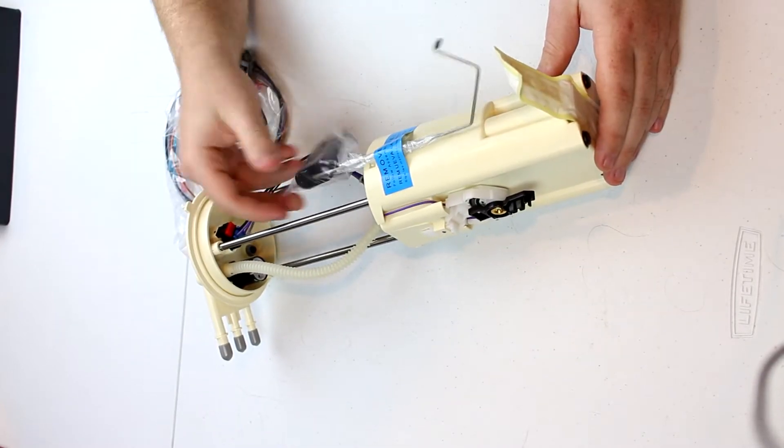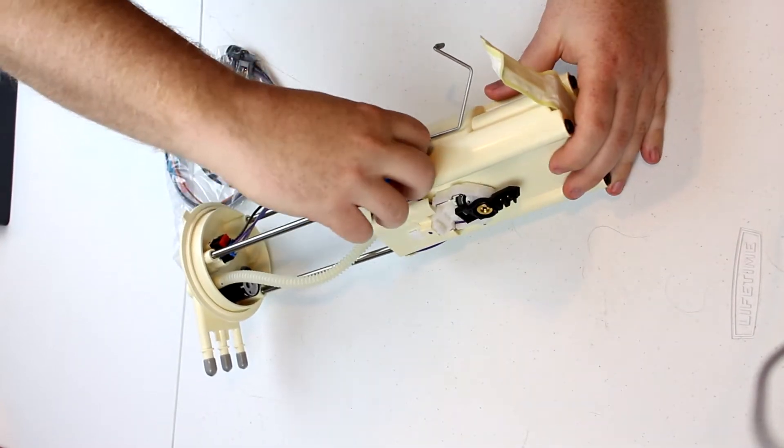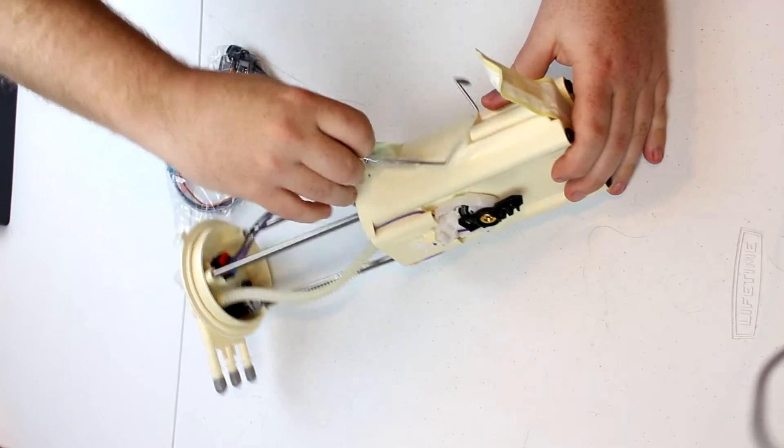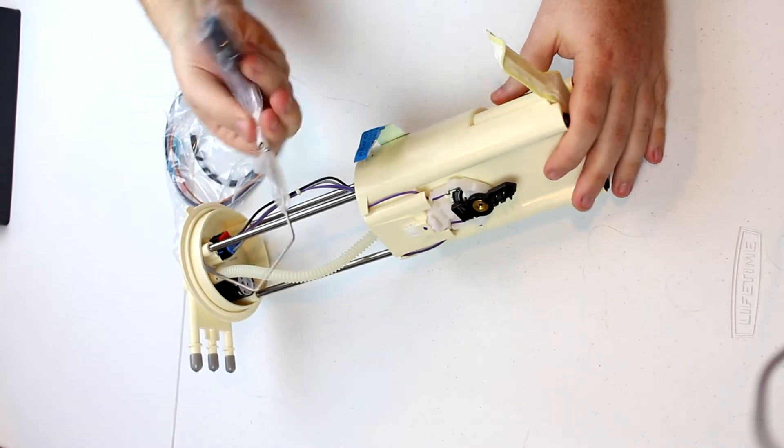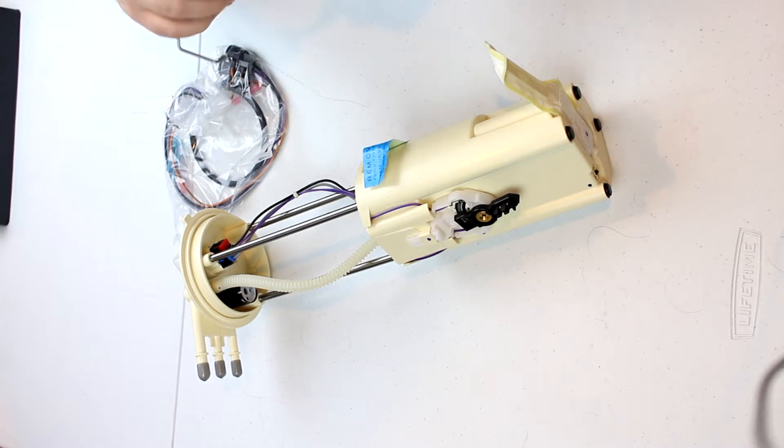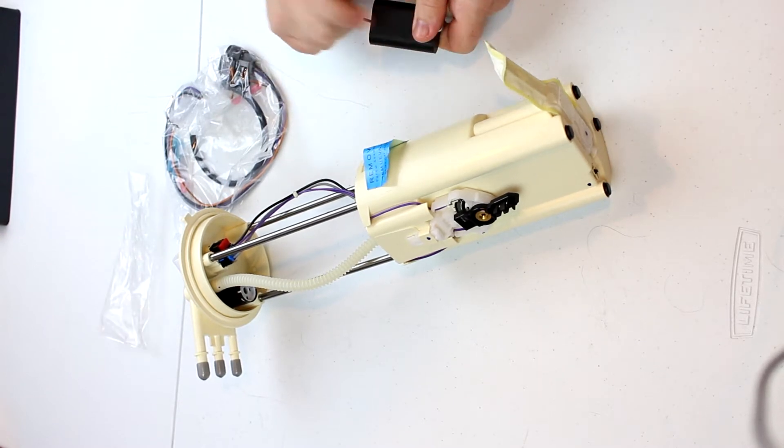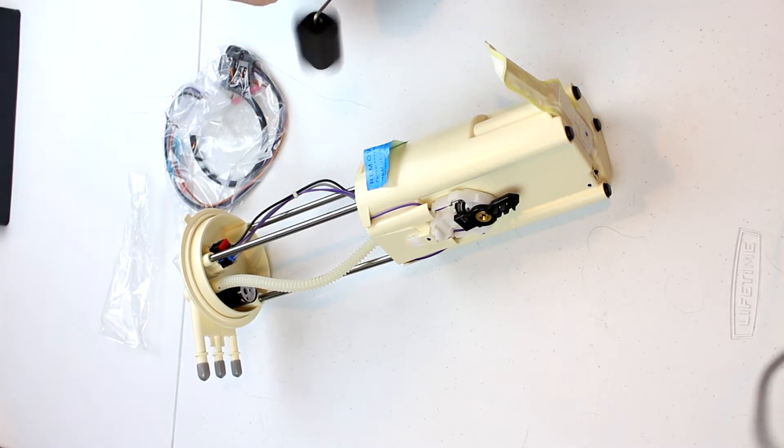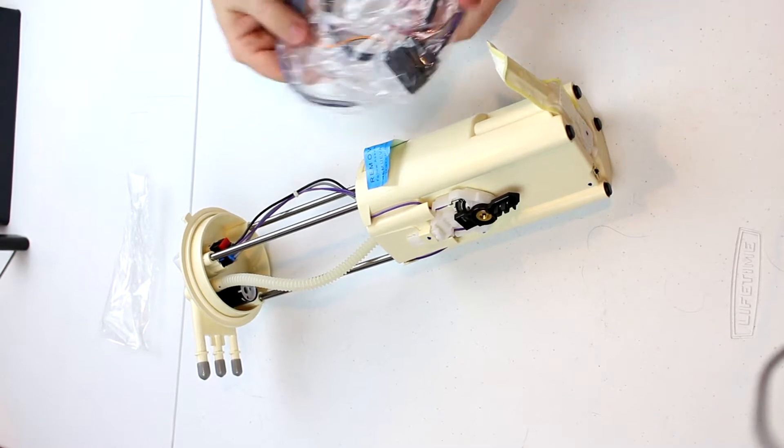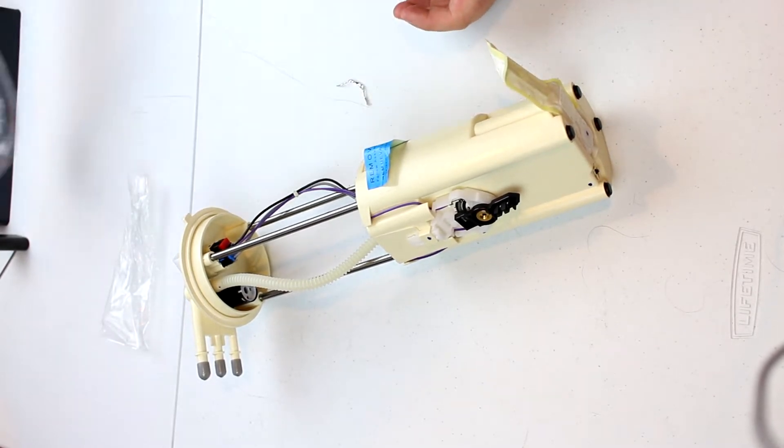It's got this float in its own little standalone sealed container. On a lot of fuel pumps this will be already installed. I don't know why this one isn't. This is just a hollow piece of plastic that's sealed enough so that it can float. These are just wires. I assume you understand how that works.